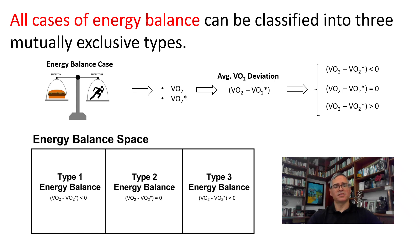In conclusion, it is now clear that all cases of energy balance can be separated into three mutually exclusive types. As we will see in the final lecture, each energy balance type leads to contradiction. This renders the Calories In-Calories Out theory as an impossible pattern. Thanks for watching, and I see you in the next lecture.